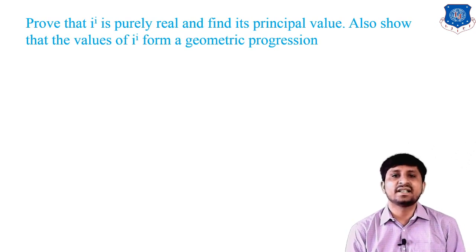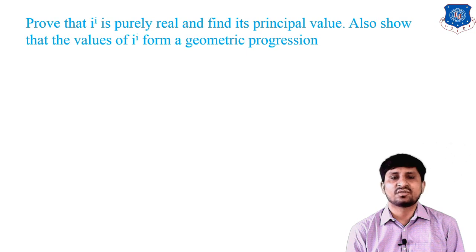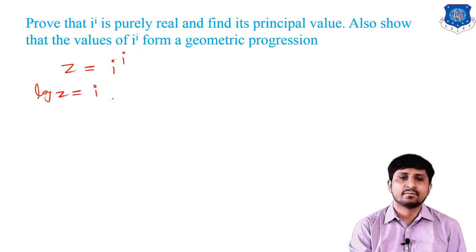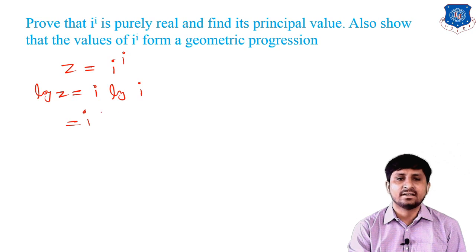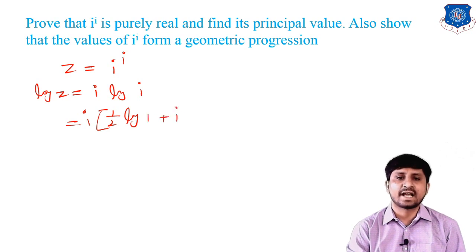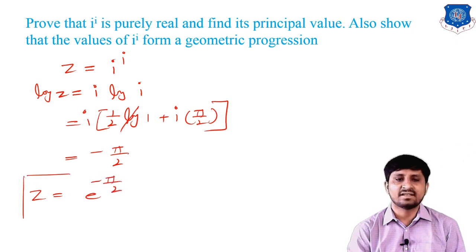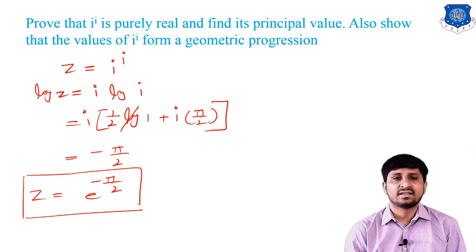Next: prove that i^i is purely real and find its principal value, and show that the values of i^i form a geometric progression. For the principal value: let z = i^i, take log on both sides. log z = i·log i = i·(iπ/2) since log i = iπ/2 for principal value. Since i² = -1, log z = -π/2, so z = e^(-π/2), which is purely real.